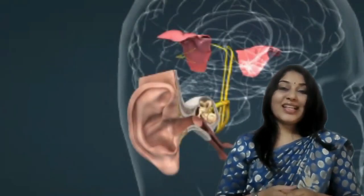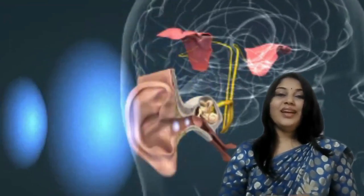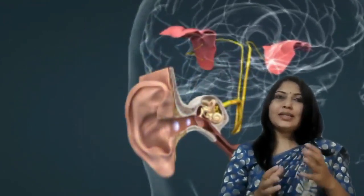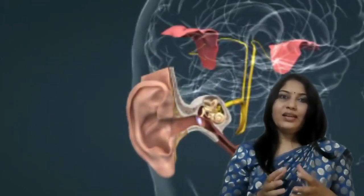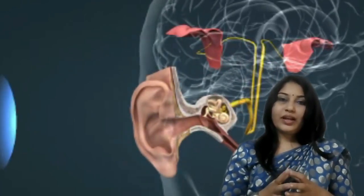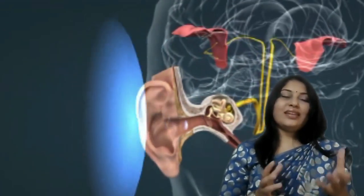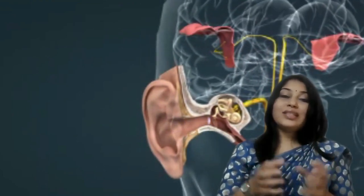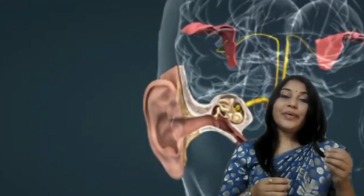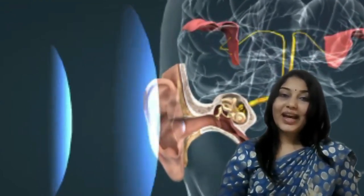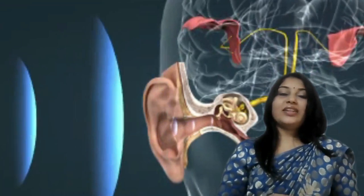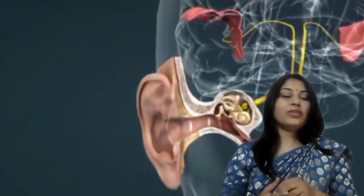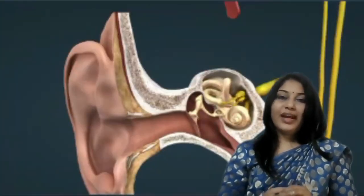The external ear works to receive sound waves from the surrounding. The auricle is in the external environment and receives sound waves, which travel through the external auditory canal. In the external auditory canal, the sound ends at the eardrum.